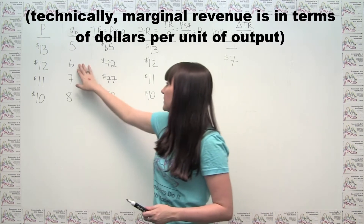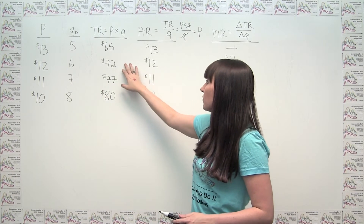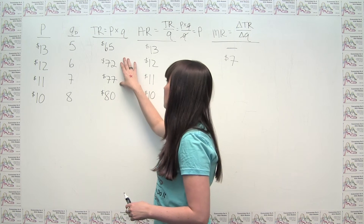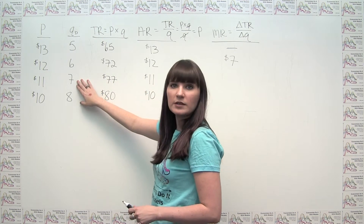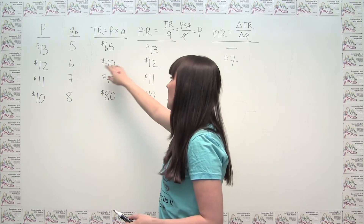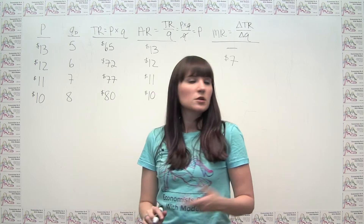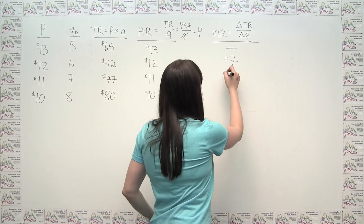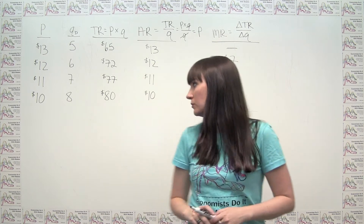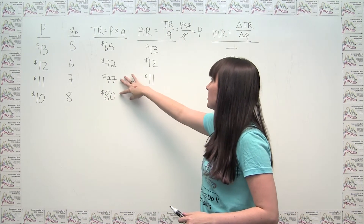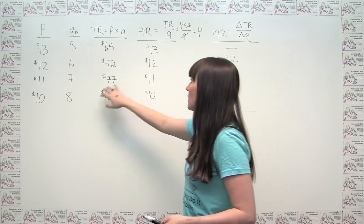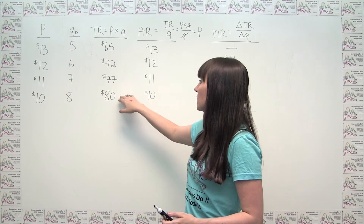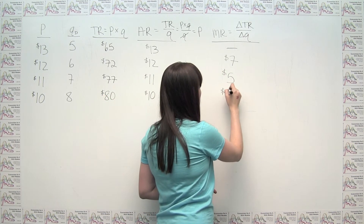For the seventh unit, we go from a revenue of $72 to $77. The change in total revenue is 77 minus 72, which is $5, and the change in quantity is 7 minus 6, which is 1. So marginal revenue of the seventh unit is $5 divided by 1, or $5. For the eighth unit, the change in total revenue is 80 minus 77, which is $3, and change in quantity is 1. So marginal revenue of the eighth unit is $3.